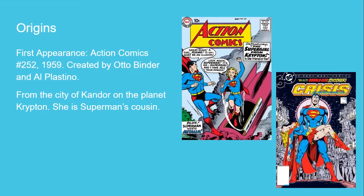Once she was on Earth, she adopted the identity of Linda Lee and came to live in Midvale Orphanage. I didn't quite understand that one because her cousin literally lives nearby. She followed in her cousin's footsteps, maintaining her cover identity and doing her best to keep her powers secret. Later, Kara was adopted by a human family named the Danvers in 1968, and she began acting as Supergirl officially, introduced to the world by Superman himself. From that point on, Kara was a fixture in the Superman family, sharing stories with Lois Lane and Jimmy Olsen.